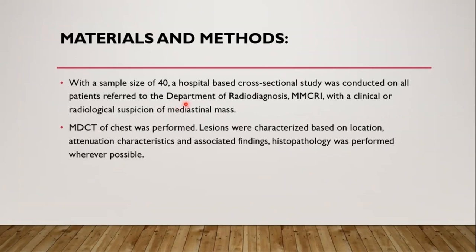Materials and methods: with a sample size of 40, a hospital-based cross-sectional study was conducted on all patients referred to the Department of Radio Diagnosis with a clinical or radiological suspicion of mediastinal mass. MDCT of the chest was performed. Lesions were characterized based on location, attenuation characteristics, and associated findings. Histopathology was performed wherever possible.